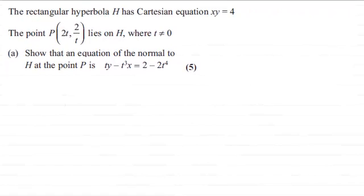Hi there. Now, for this question, we're given the rectangular hyperbola H has Cartesian equation xy equals 4. And the point P with coordinates 2t and 2 over t lies on H, where t doesn't equal 0.